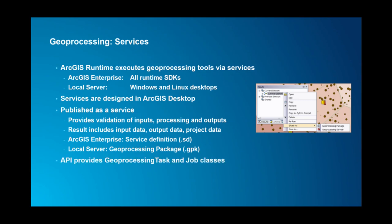The Runtime APIs provide a geoprocessing task class that allows you to work with the service, and job classes handle the specific execution of that task. The Local Server API also includes administration facilities for starting and stopping the local server itself, checking the lifecycle, and starting and stopping those services.